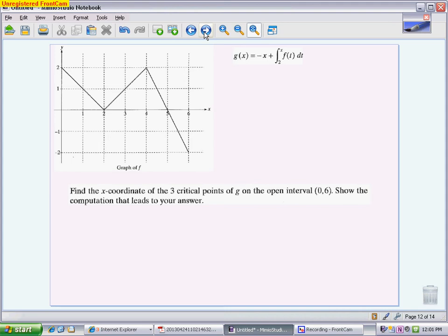For part B, it wants to know the x coordinate of the critical points and then show how we got those answers. So first, I want to write that in order to find a critical value, I need the derivative to equal 0. And I've already written before, and I'm going to write it again, that the derivative equals negative 1 plus f of x. So what this is saying is when does that equal 0? What that means is if I add 1 to both sides, what I'm looking for is when does f of x equal 1.